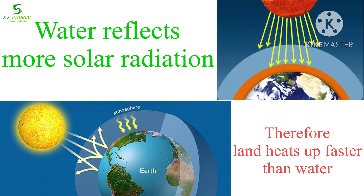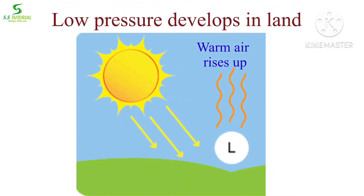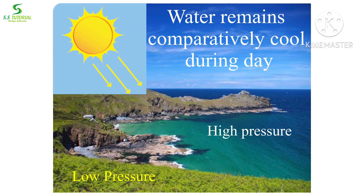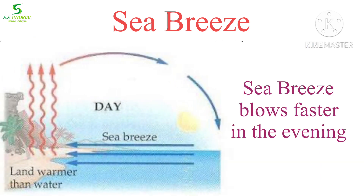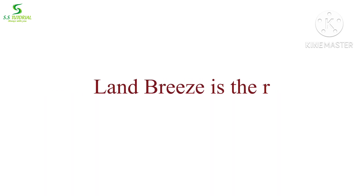Water has high specific heat and reflects much more solar radiation. That is why land and the air above it heat up rapidly compared to water. During the day, as land heats rapidly, the air above it also heats faster, becomes lighter, and rises up, creating a low pressure zone over the land. Meanwhile, the water body and air above it remain comparatively cool, developing a high pressure zone. Winds blow from high to low pressure — that is, from sea to land — forming the sea breeze, which blows faster in the afternoon to evening.